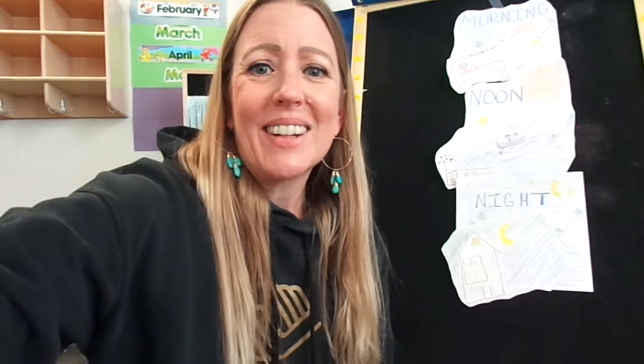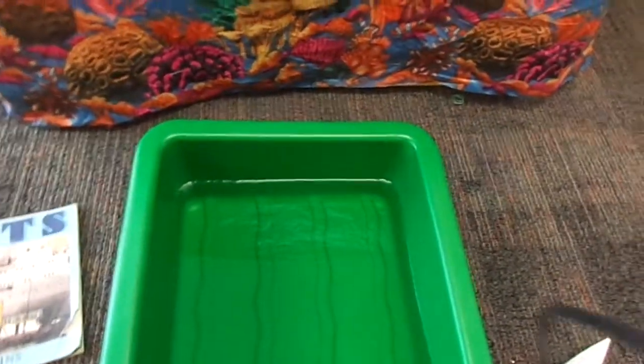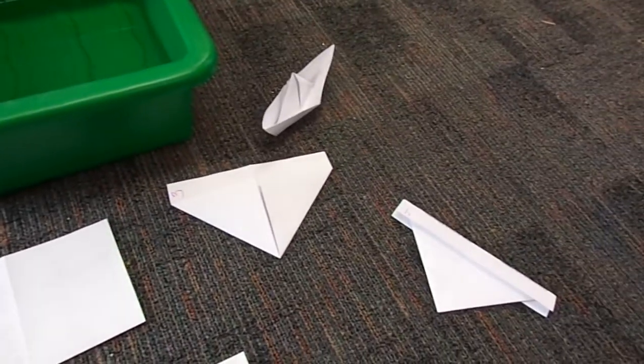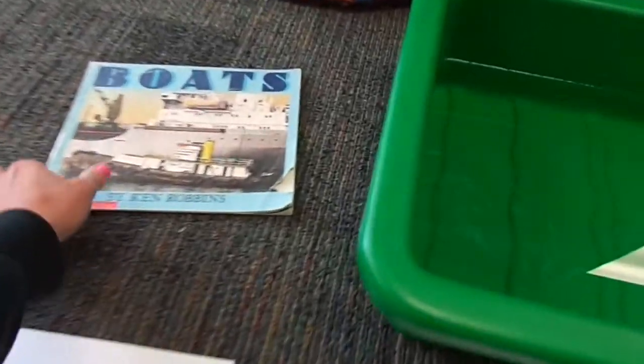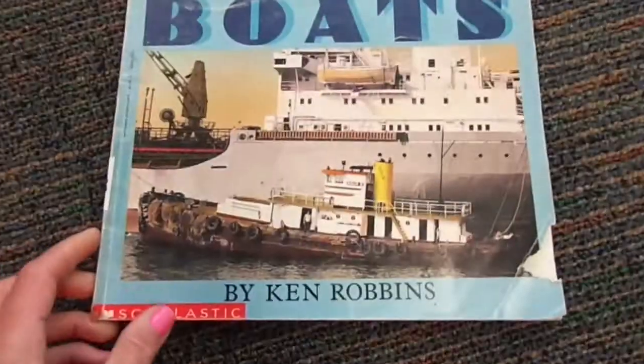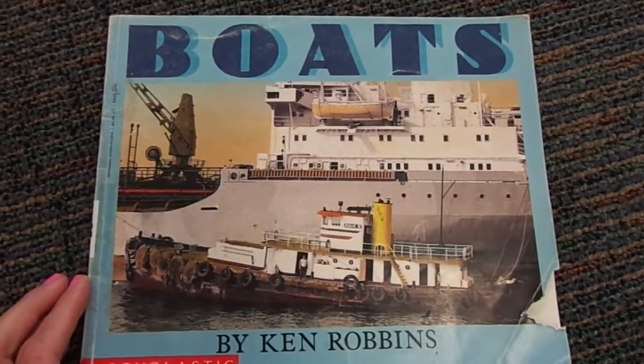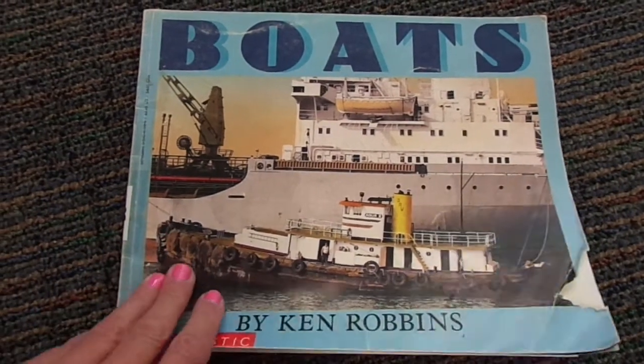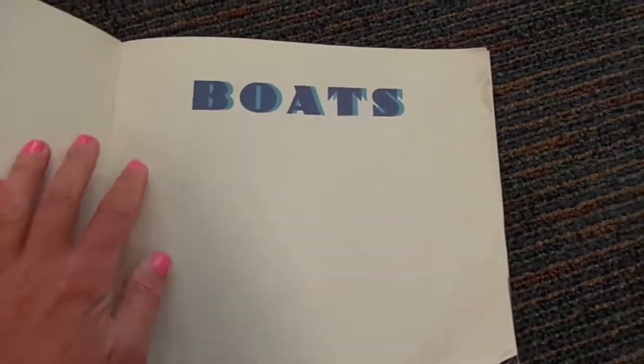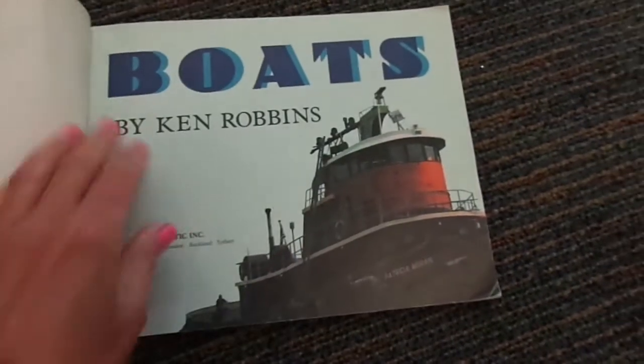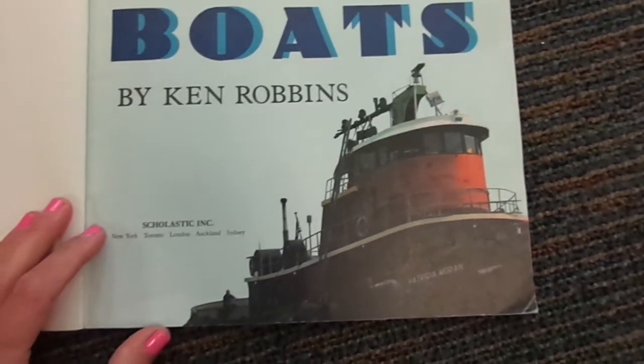We're going to move over to a fun activity all about paper boats. We have a bucket of water and a whole bunch of pieces of paper folded up. But first, let's check this book out — this book is called 'Boats' by Ken Robbins. Did you know there are so many different kinds of boats? Let's check it out — that looks like a big tugboat!